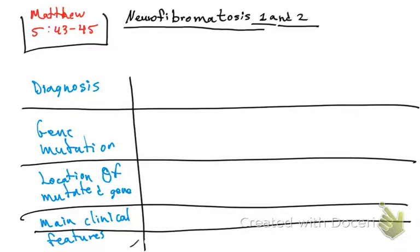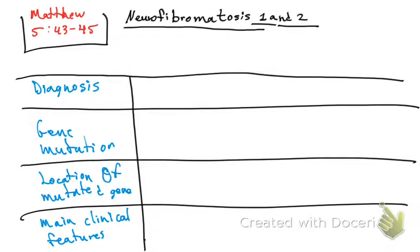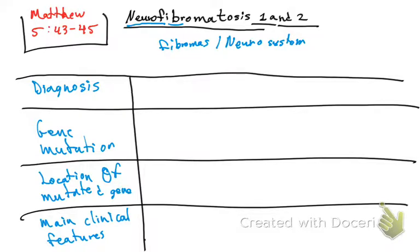When you think of the word neurofibromatosis, one way to remember some of the characteristics is to break it down: 'neuro' and 'fibromatosis.' That means the patient is going to have fibromas and the neural system is going to be involved.